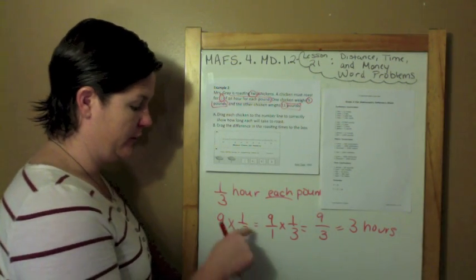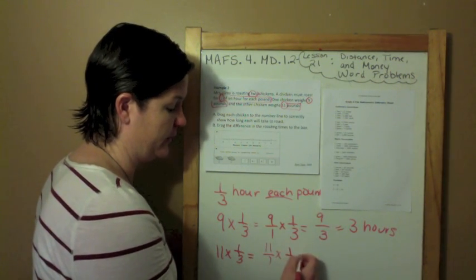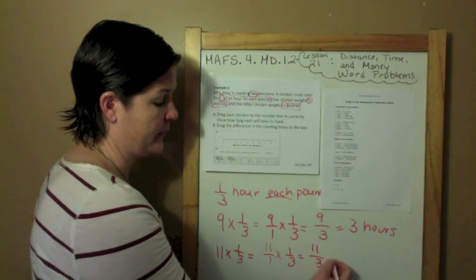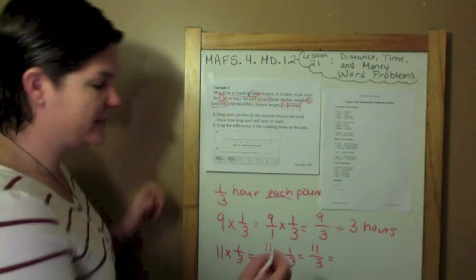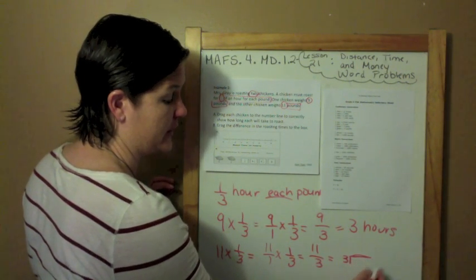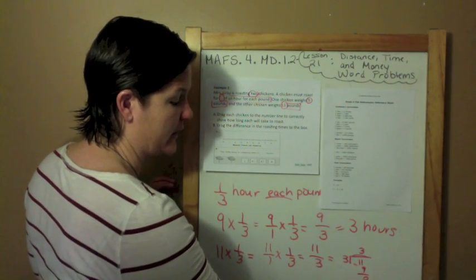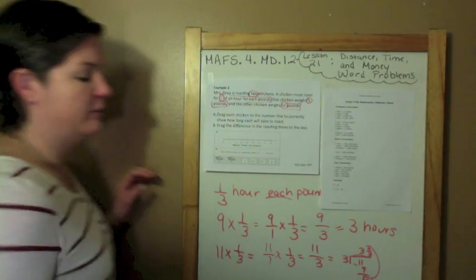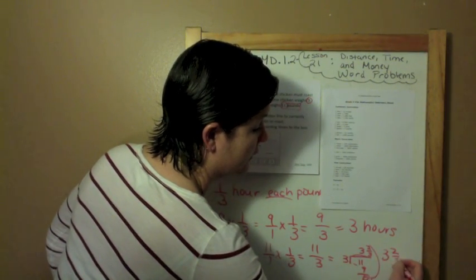And then for the eleven pound chicken, that would be 11 over one times one third. 11 times one is 11. One times three is three. And 11 divided by three doesn't reduce easily. Three goes into 11 three times, which is nine. Subtract. Bring my divisor over for my denominator. So that's three and two thirds hours.